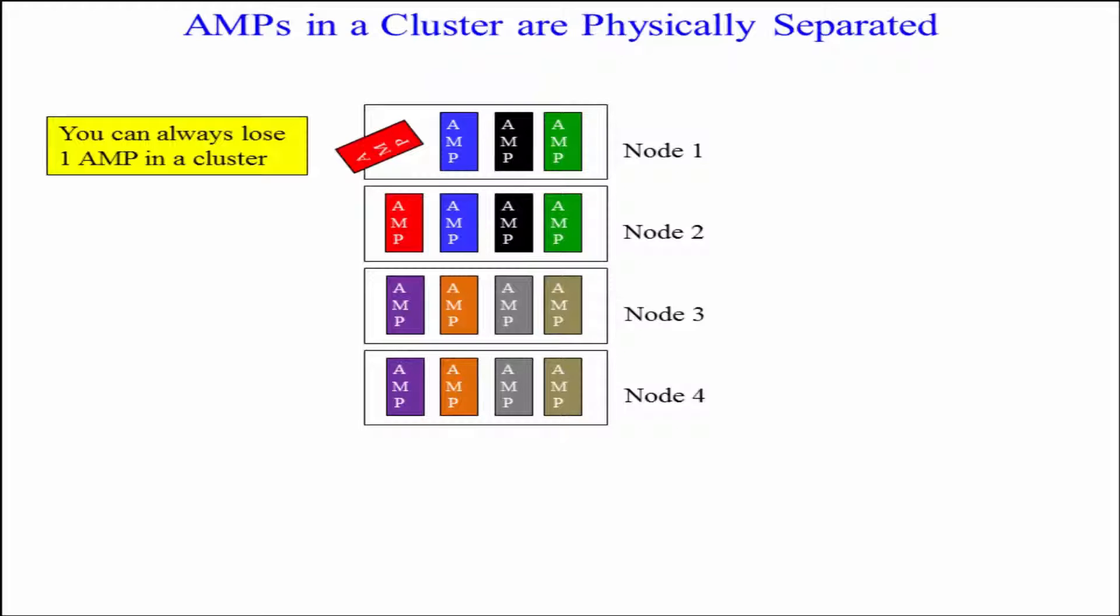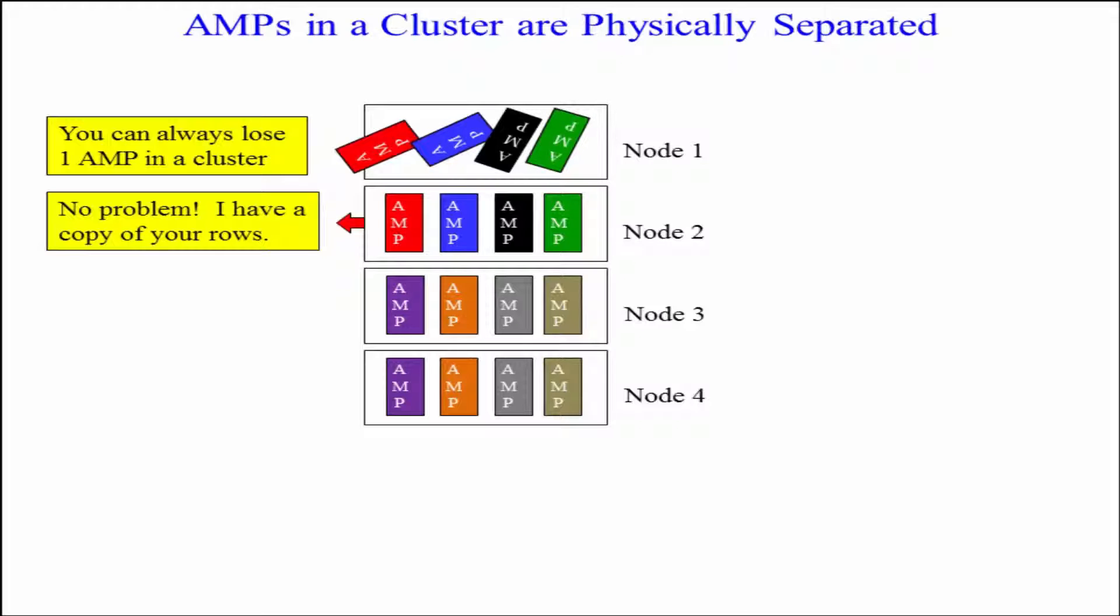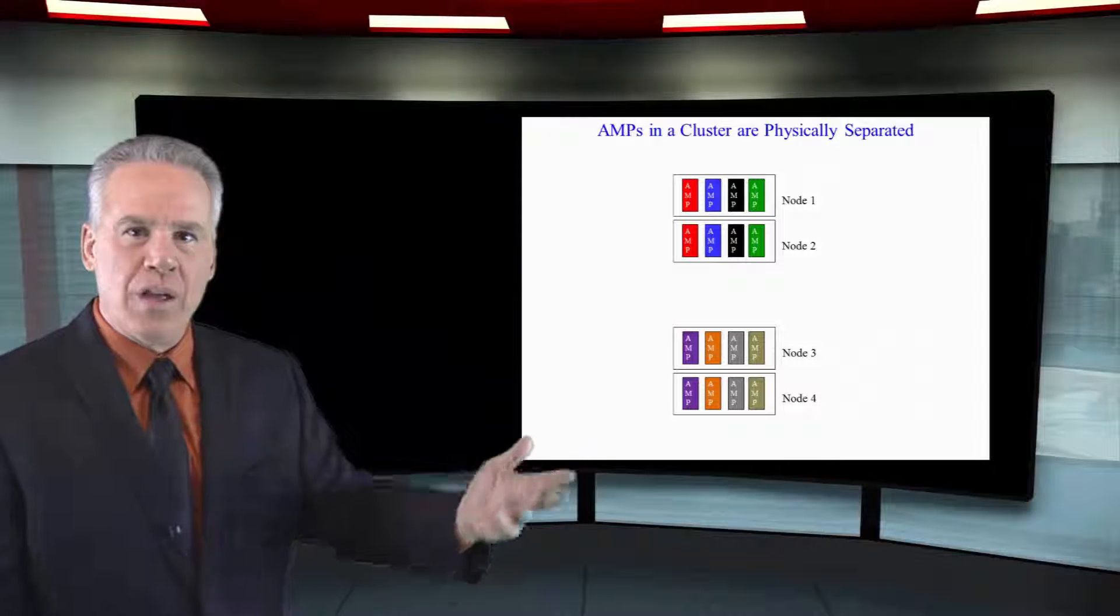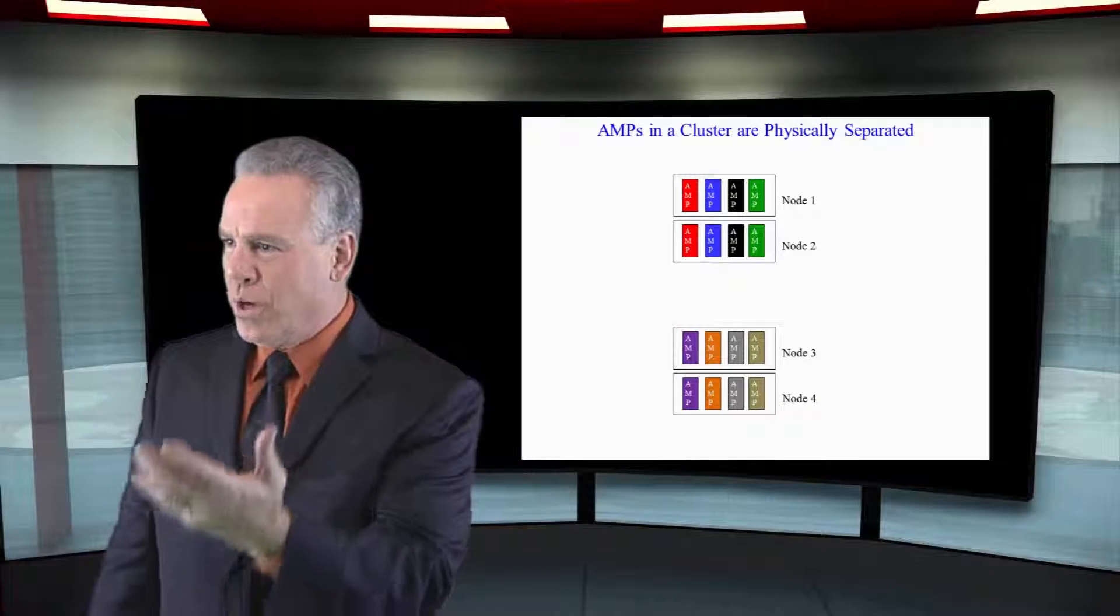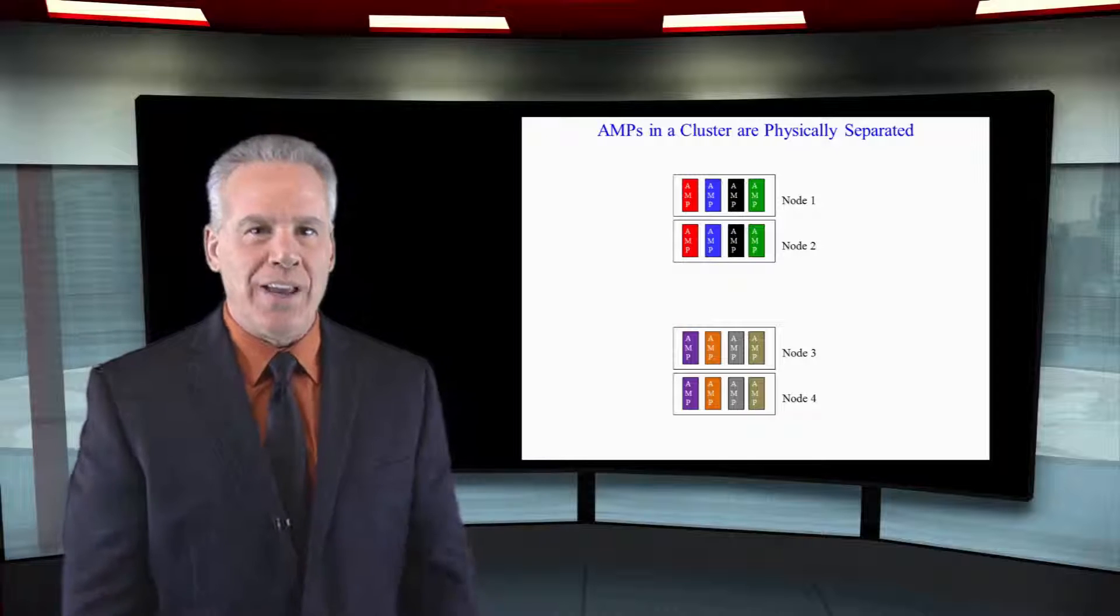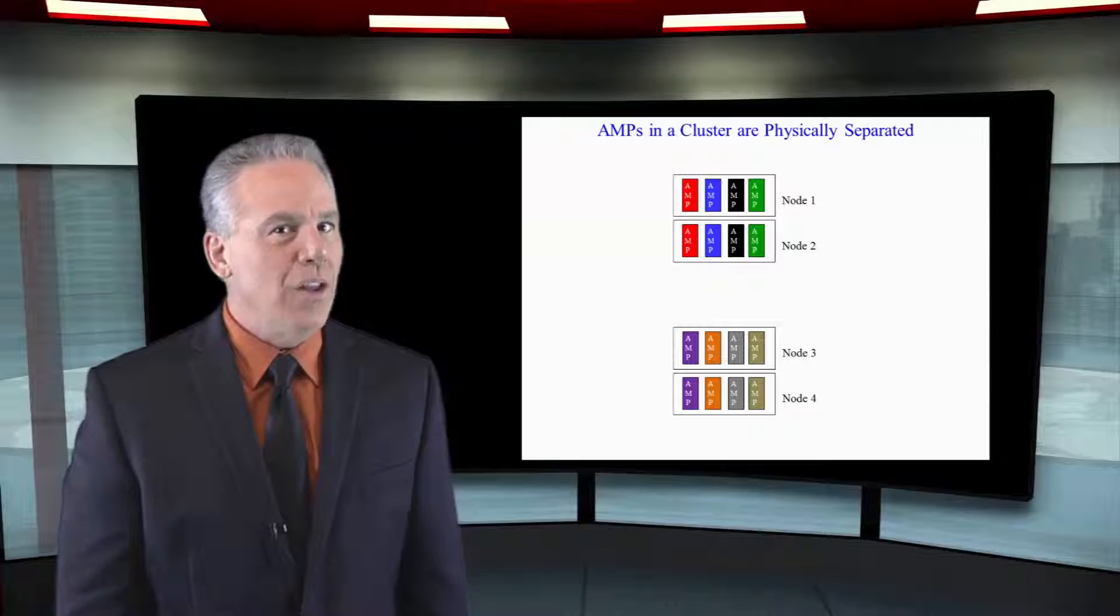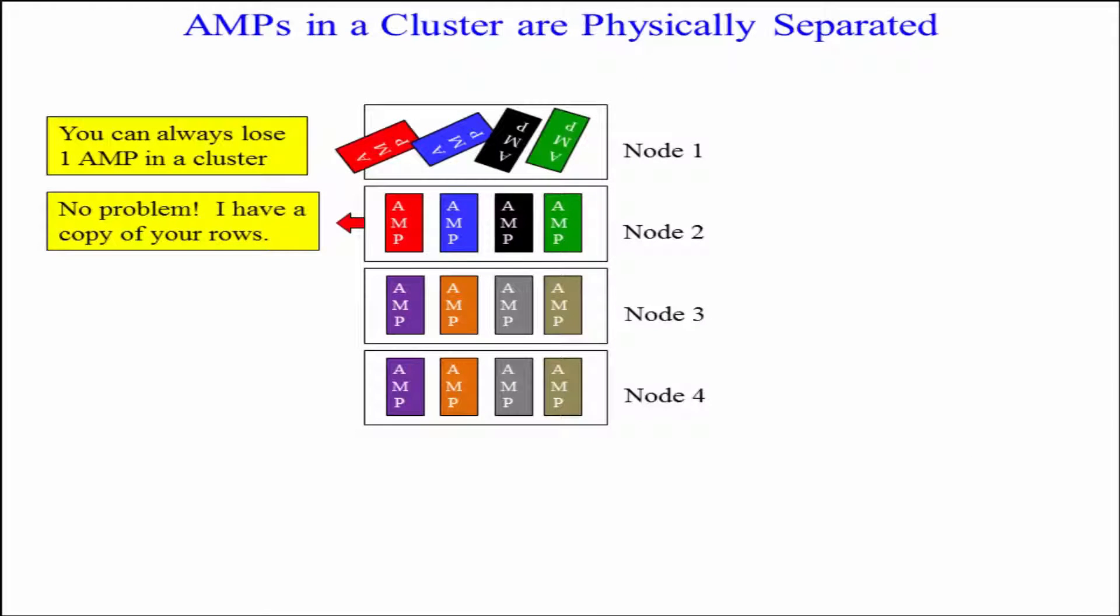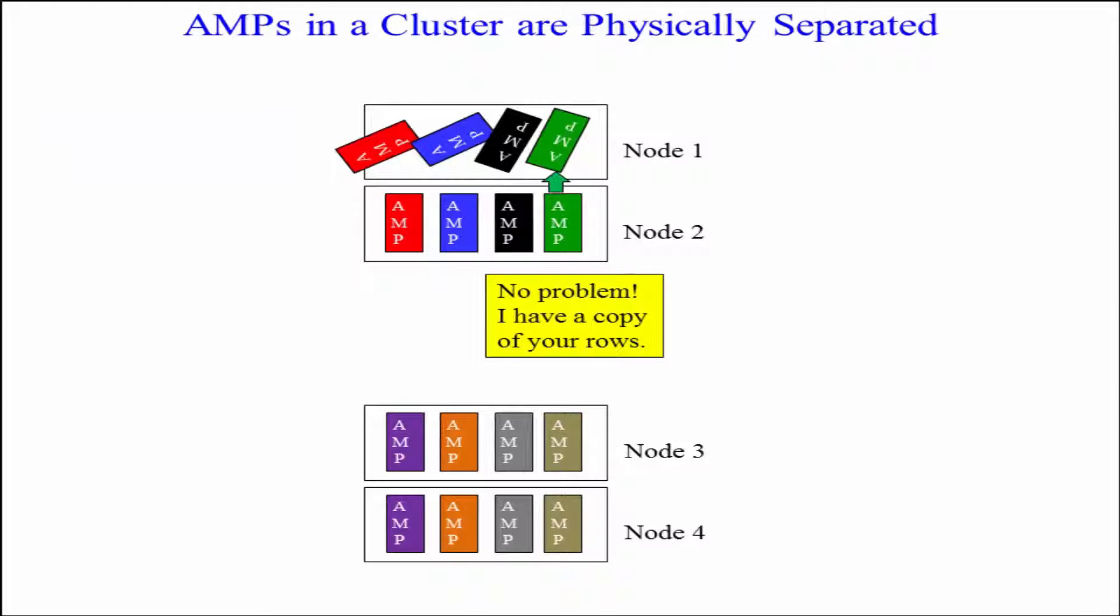You see, why put two AMPs in the same node in the same cluster? If the node goes down, there's no protection. So even if we lost the entire first node, they would say can we still query the system? Yes, we can because we've only lost one AMP in cluster one, one AMP in cluster two, one AMP in cluster three, and one AMP in cluster four.